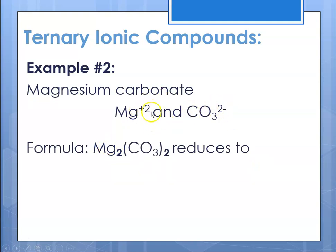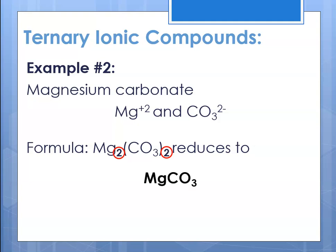You'll notice that we have twos in both subscripts. Remember, when we write a formula for an ionic compound we have to reflect the lowest whole number ratio. Those twos can be factored out, and we get MgCO₃.